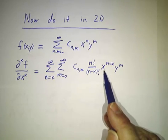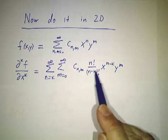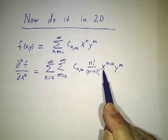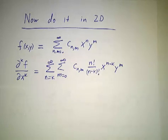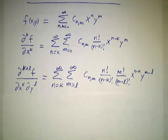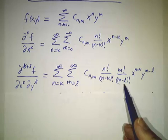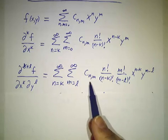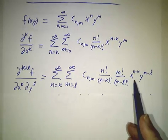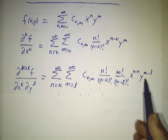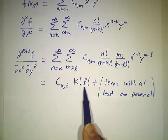All the terms with more than k x's lose k of their factors. They pick up a coefficient along the way. You get n times n minus 1 times n minus 2 times n minus 3 all the way down to n minus k plus 1, and that's this ratio. Then if we take a derivative with respect to y l times, now the x's come along for the ride and the exact same thing happens to the y's. You notice there's exactly one constant term. That's the one that had been x to the k, y to the l. So if n is k and m is l, you get x to the 0, y to the 0.